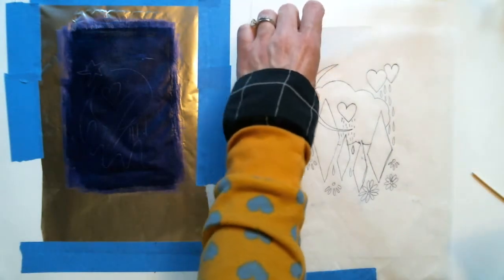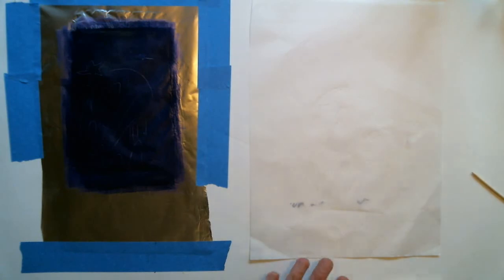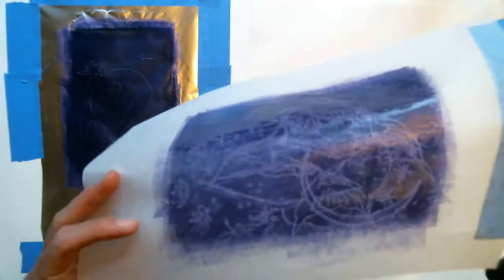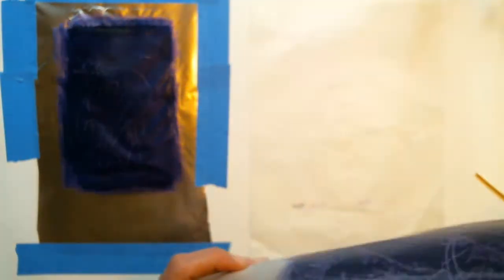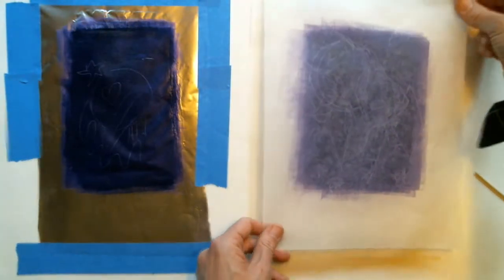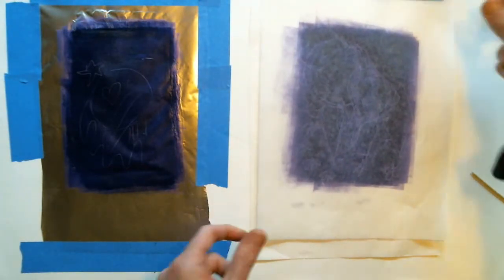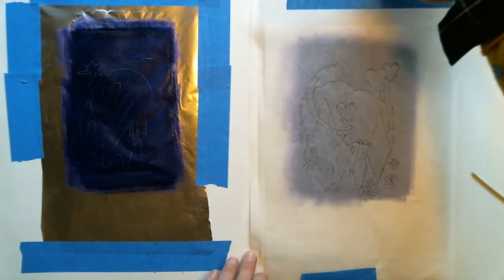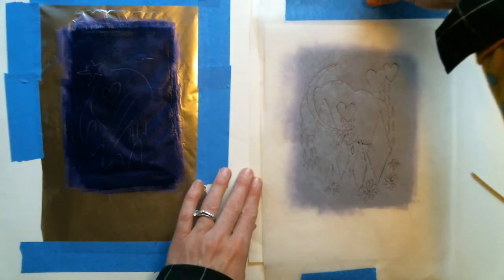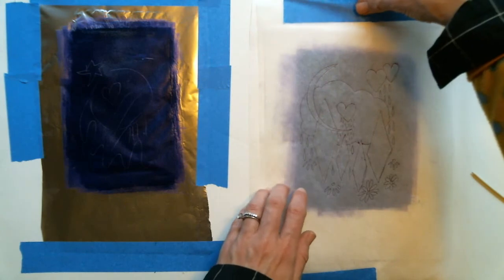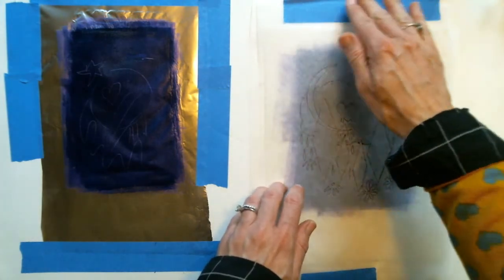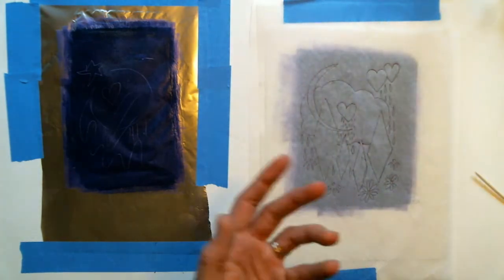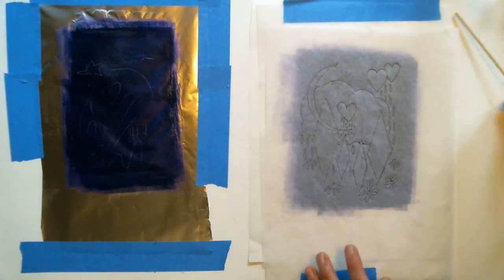I'm going to move that out of the way. Now I've got my inked up sheet of transfer paper. Essentially what you've got here is transfer paper. I'm going to slide it down until I see it underneath my image, and then I'll also tape that transfer paper down. That just keeps things from moving around.